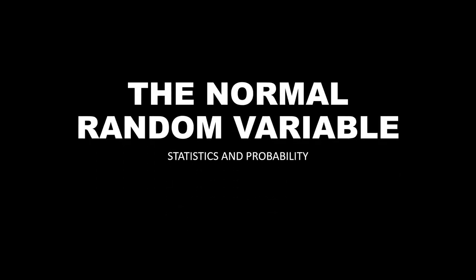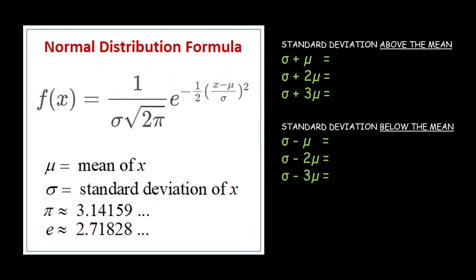Hello everyone. In this video we are going to learn how to solve the normal random variable. We have a formula for the normal distribution: f(x) equals 1 over standard deviation times square root of 2π, times e to the power of negative one-half of the quantity x minus mean over standard deviation, squared.